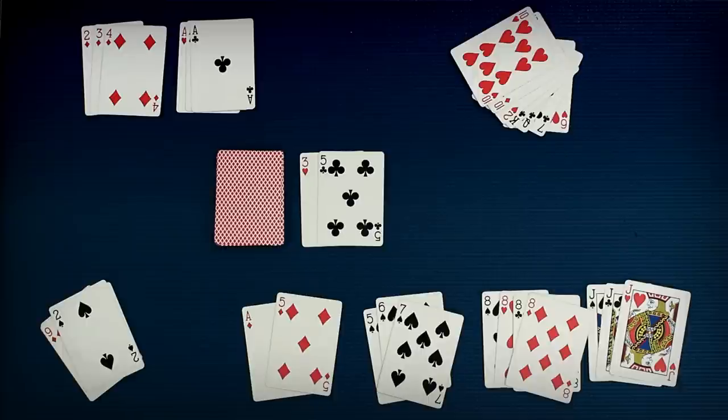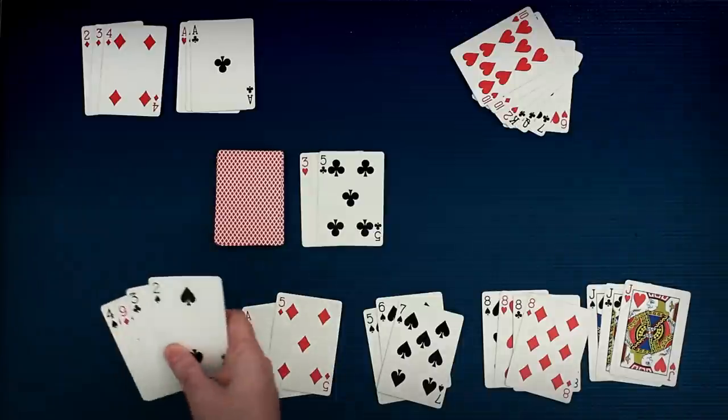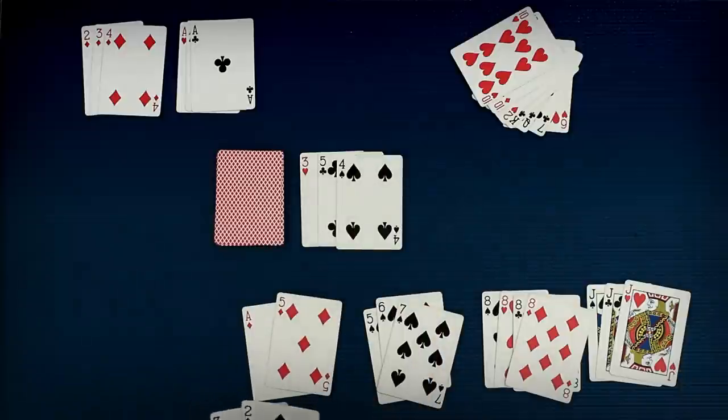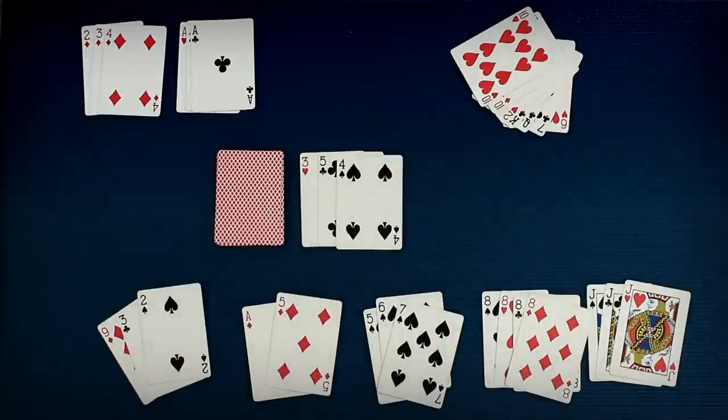After you're done putting down your melds, the third and last part of your turn is to discard. This is not optional. You have to take one of the cards from your hand and put it face up on the discard pile. You can't take it back. This ends your turn. And now it's the next person's turn to draw.